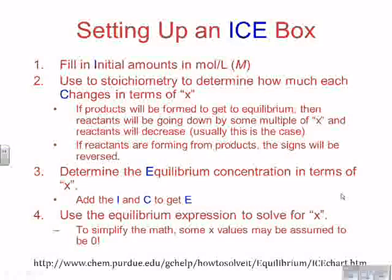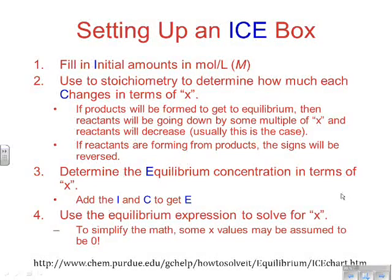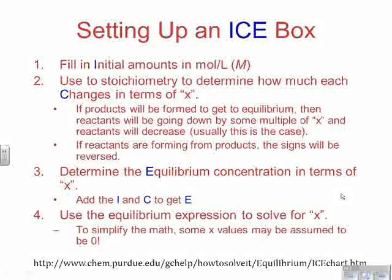Step four is you're going to use the equilibrium expression to solve for x. If we don't know it and don't have enough clues to figure it out, we're going to have to use our solution of k to figure it out. To simplify the math, some x values may be assumed to be zero because sometimes we have situations where it's such a small difference, we assume it's zero.